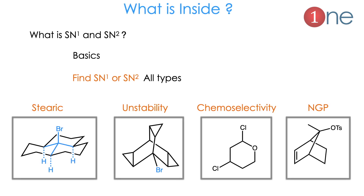What is inside this video? We will see what is SN1 and SN2, then we will see some basics, then how we can find SN1 or SN2 types, then the controlling parameters such as steric effect, instability, chemo selectivity, and neighboring group participation. We will see one by one.